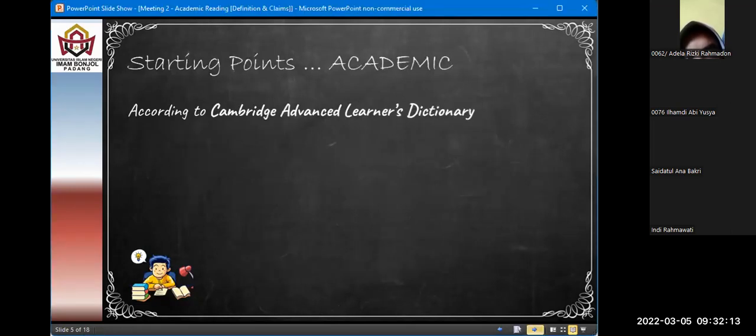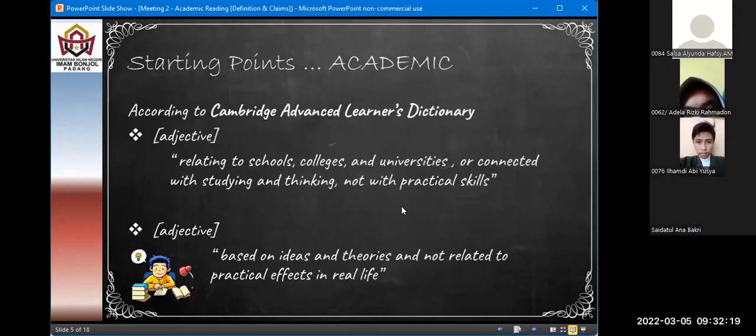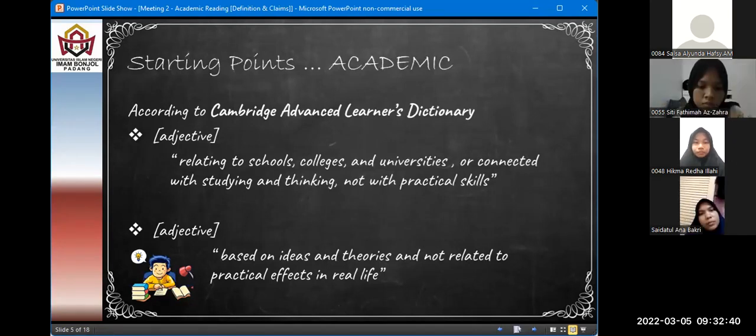Nah, sekarang kita lihat di kamus lainnya. Kata akademik didefinisikan sebagai, ini dia. Silakan dibaca, Adela Rizky Rahmadun. Dari kamus Cambridge Advanced Learners, adjektif relating to schools, colleges, and universities are connected with studying and thinking, not with practical skills. They sit on ideas and theories, and not related to critical effects in real life. Okay, thank you.